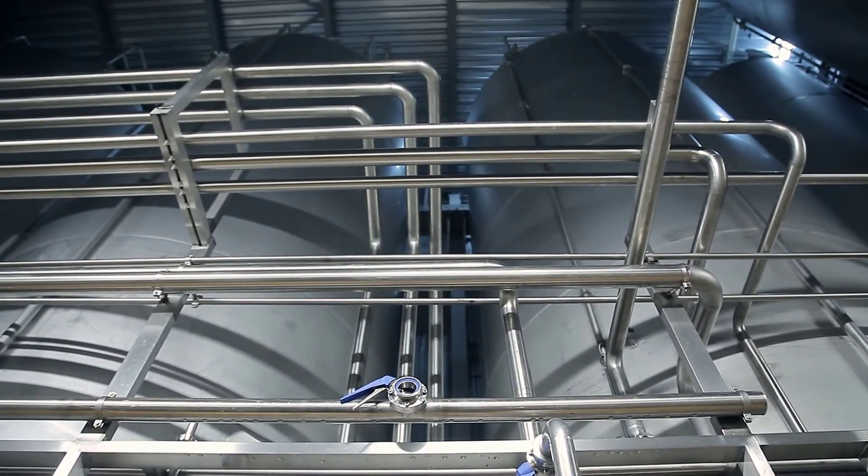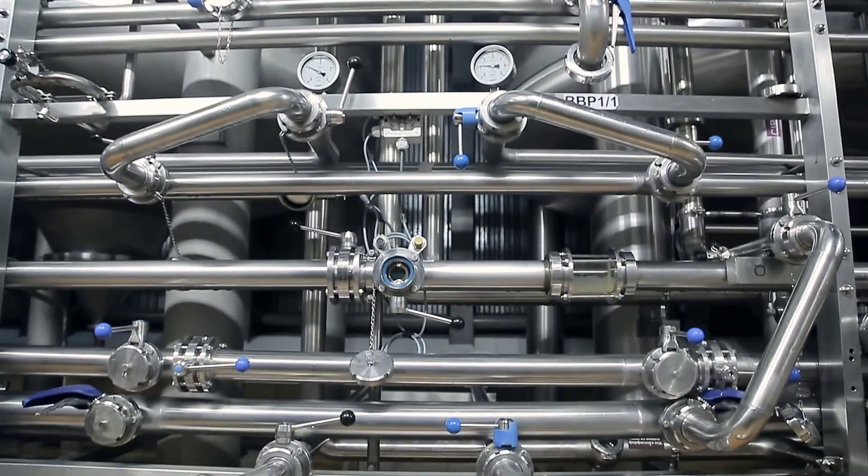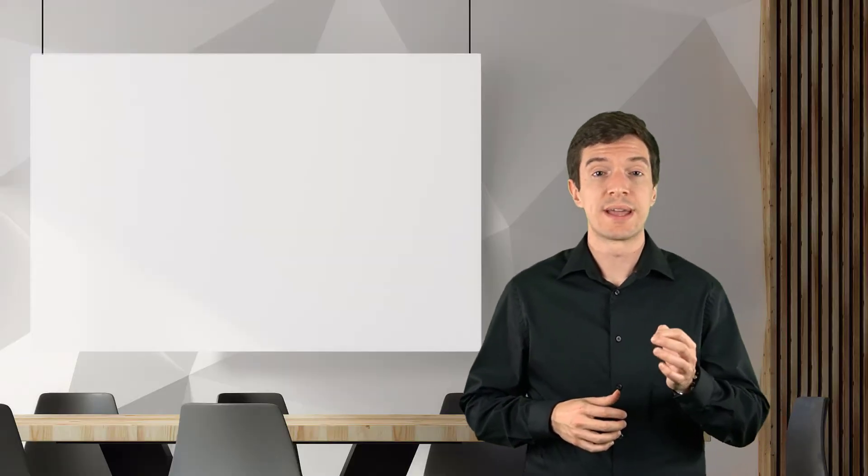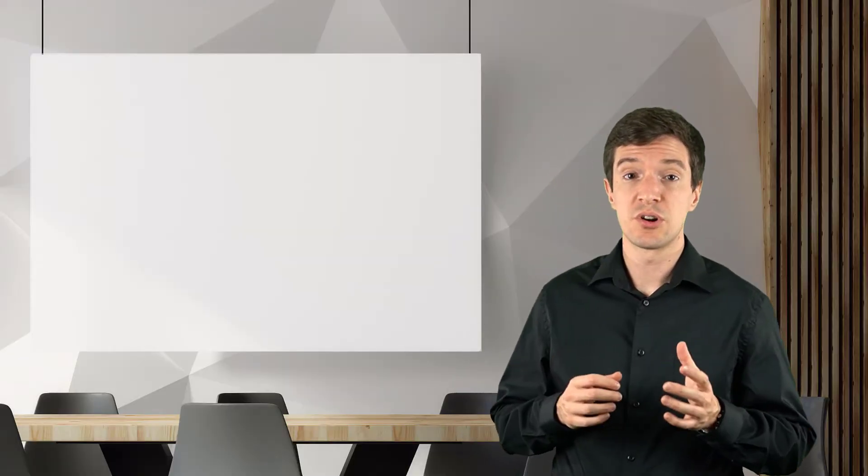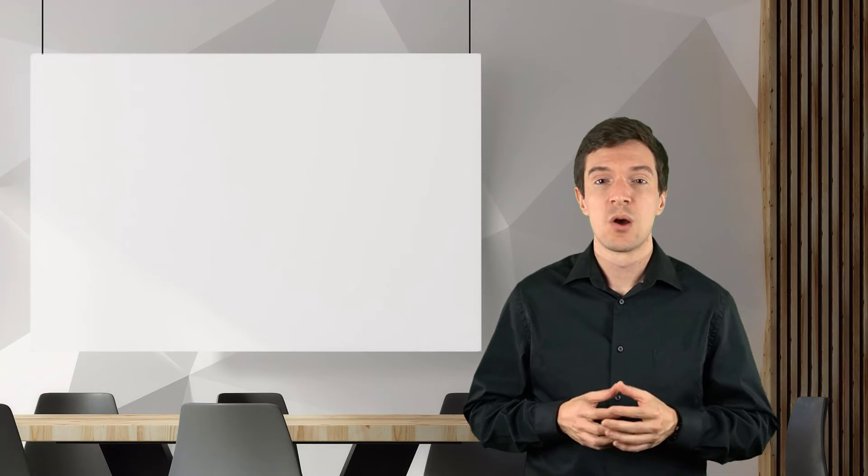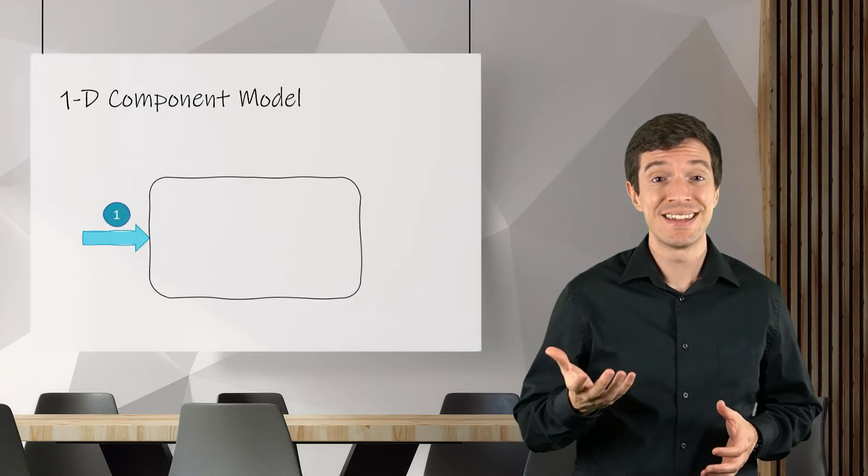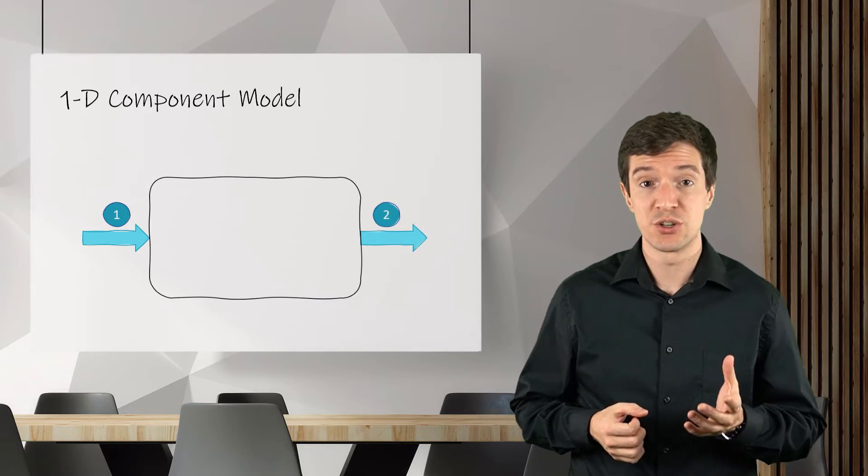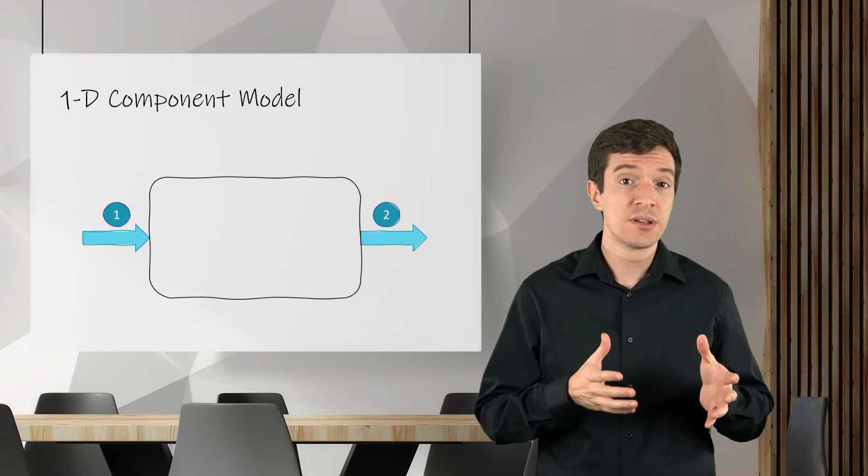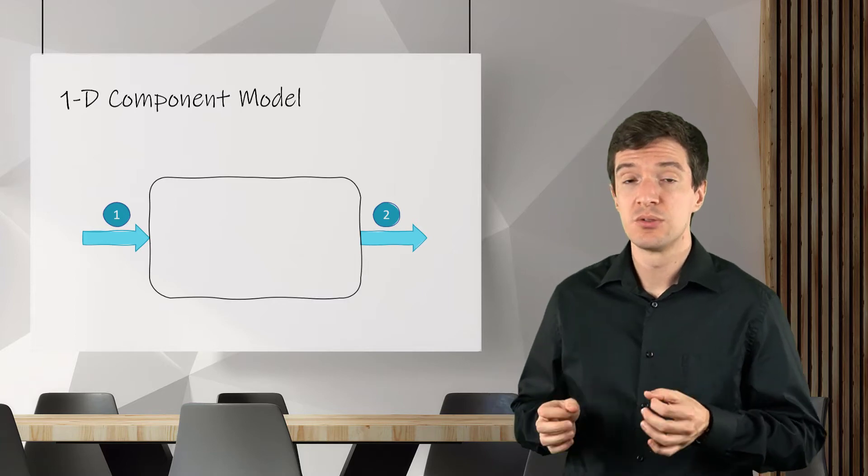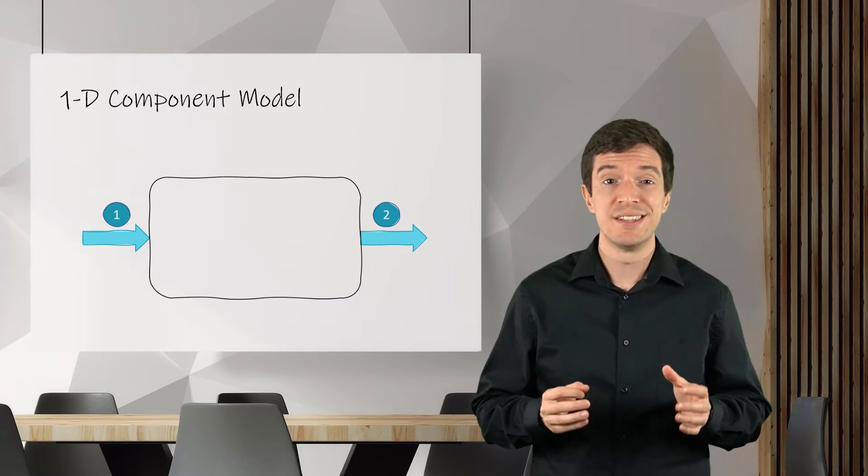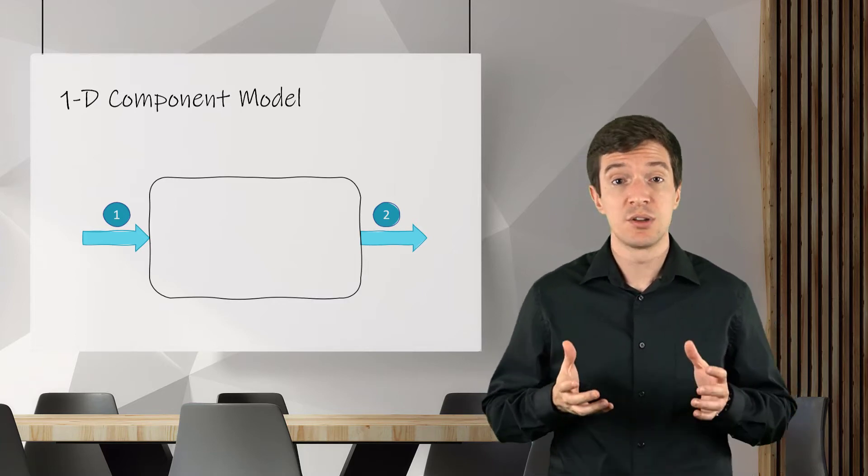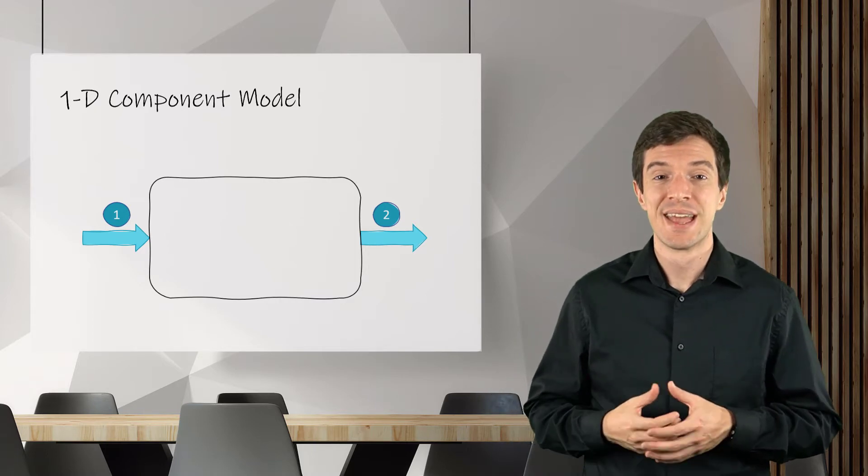The flow through all these different components can become very complex. However, we can estimate the pressure drop through the component in a similar way as done for the straight pipe flow. What we can do is to set specific inlet and outlet locations for the component and correlate the pressure drop to the Reynolds number and the geometric features of the component.